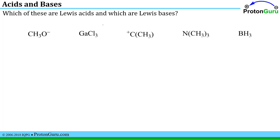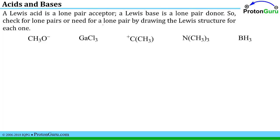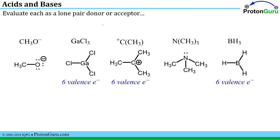Now that we have reviewed the Lewis acid-base definitions, we can answer a question asking which species are Lewis acids and which are Lewis bases. The definition has to do with accepting or donating a lone pair, so we draw out the Lewis structures to identify which species may have lone pairs to give and which may need a lone pair. Looking at the periodic table, we identify three of these species as having only six valence electrons — the gallium, the carbon, and the boron.